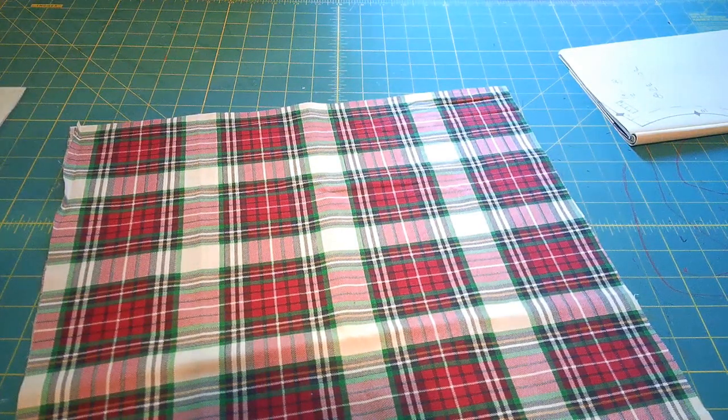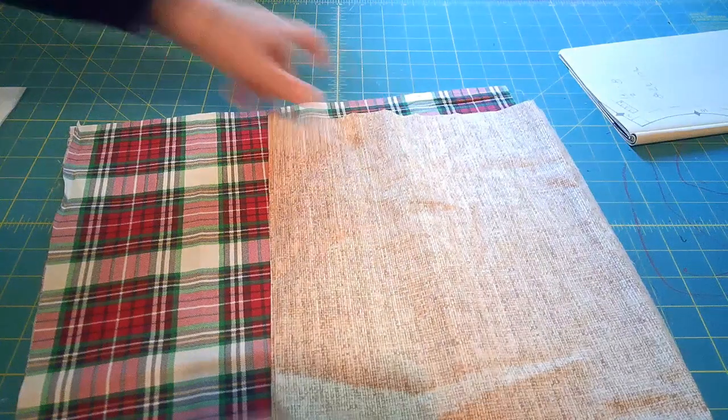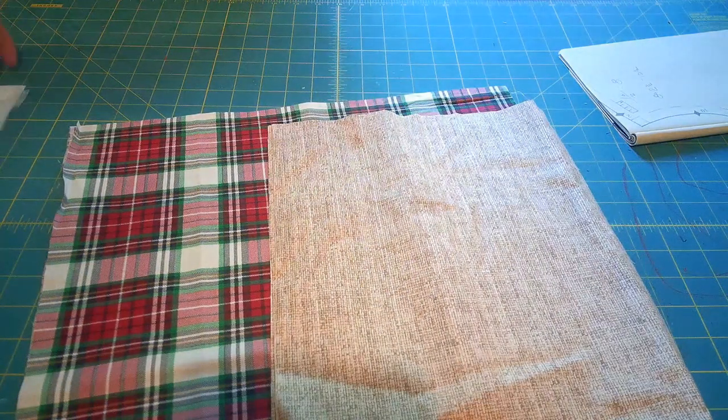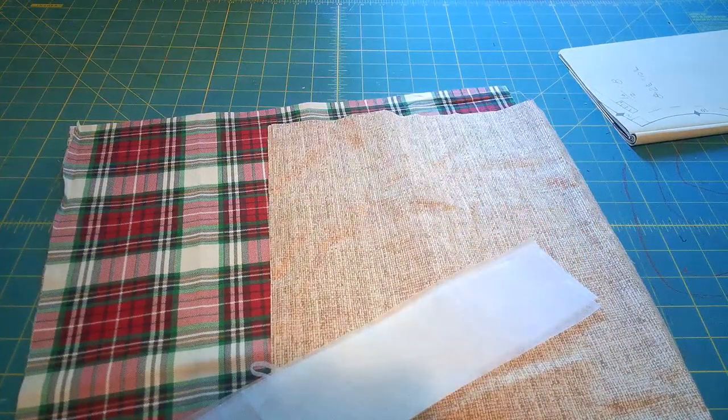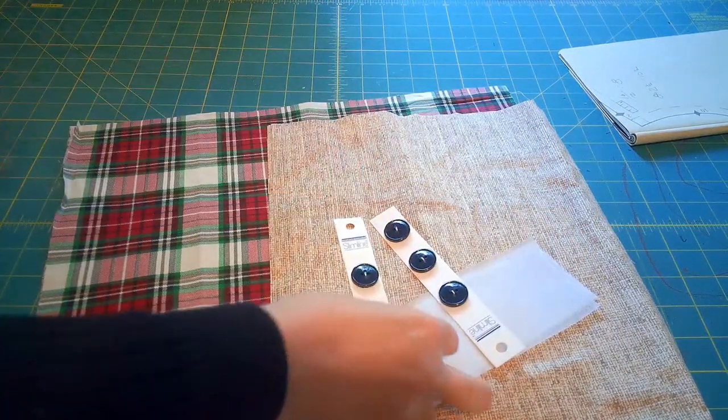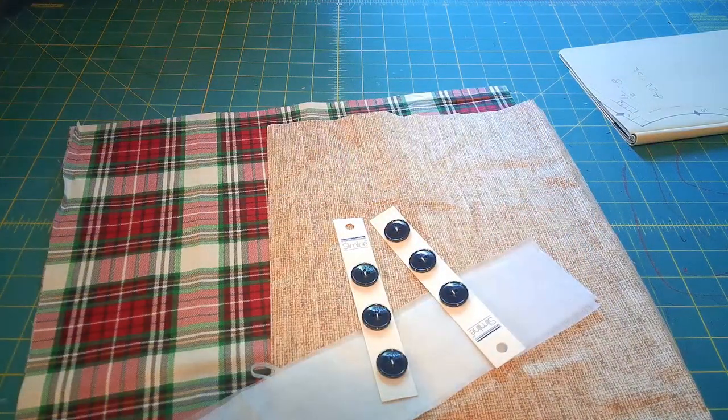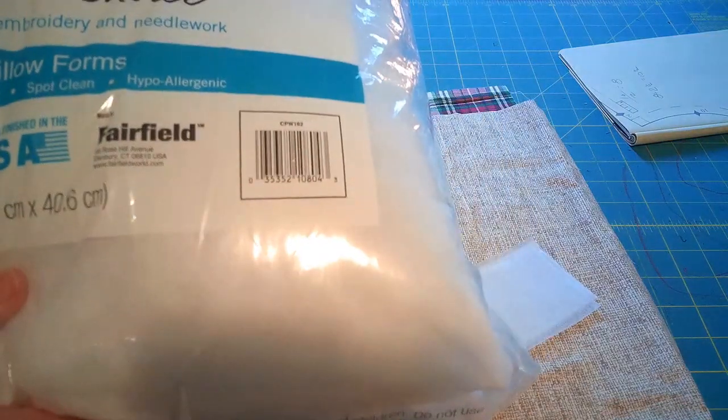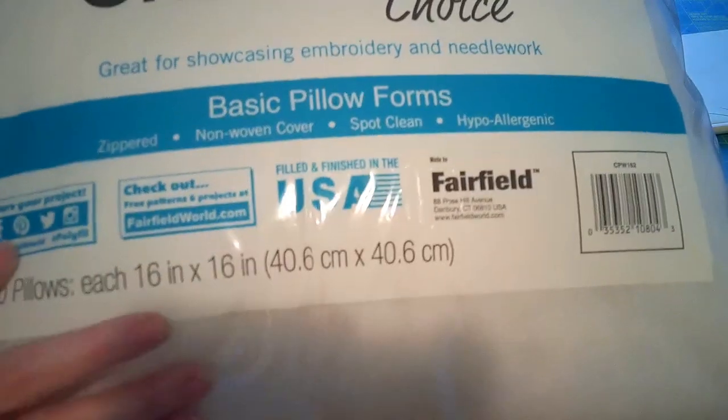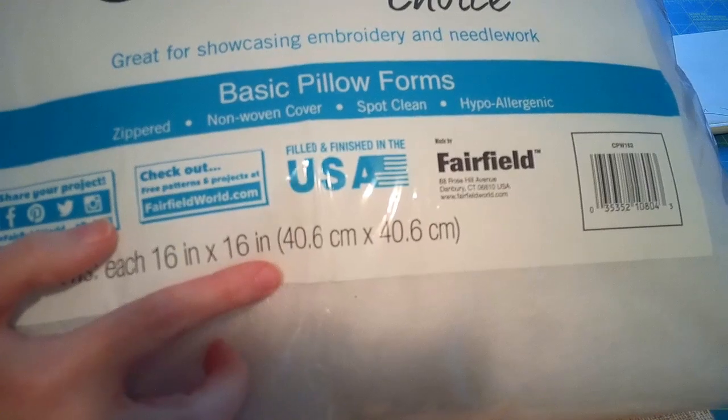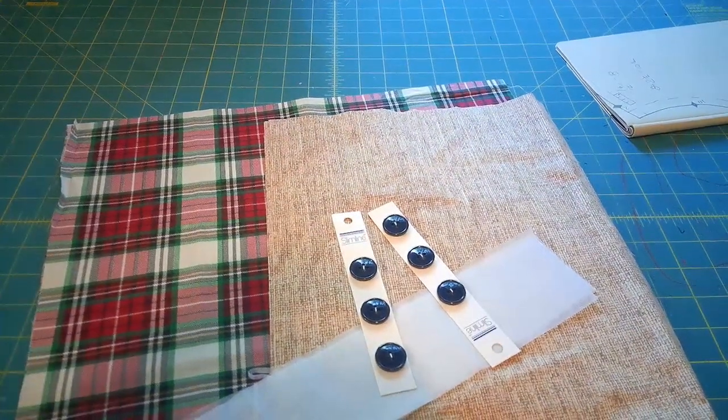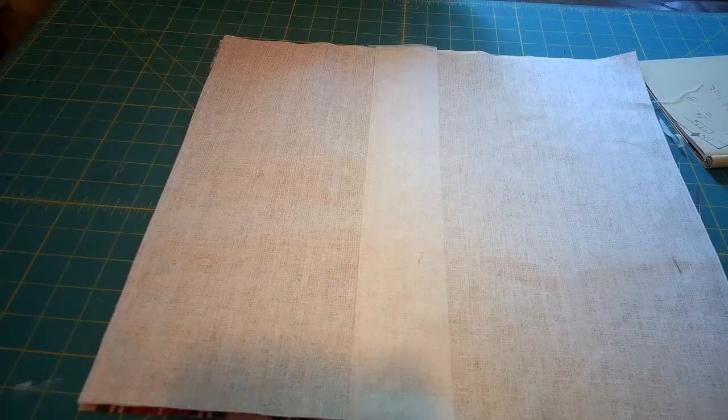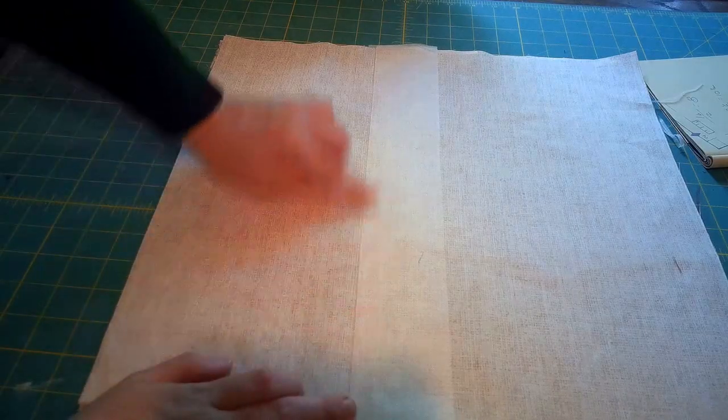Okay, so here's the supplies you'll need. You'll need a top fabric, mine's 16 by 16. You'll need a bottom fabric, these are 10 by 16. You'll need strips of interfacing and buttons to close at the back and pillow forms. These pillow forms are 16 by 16.